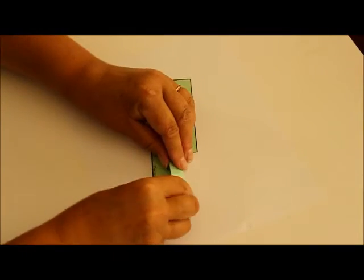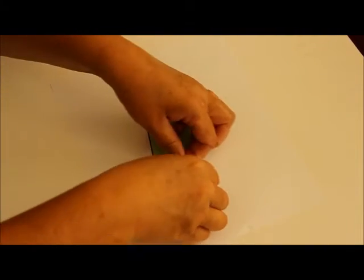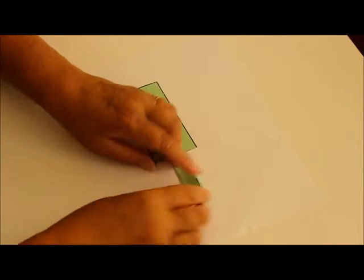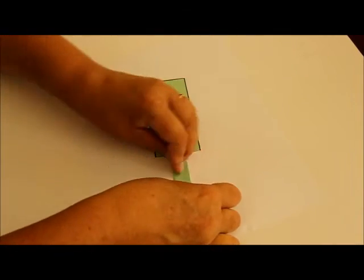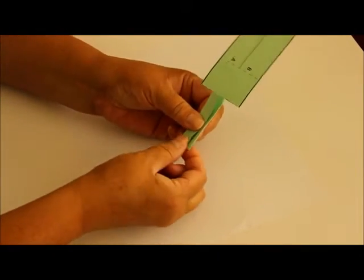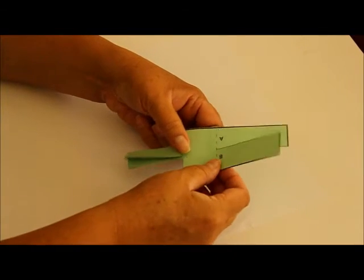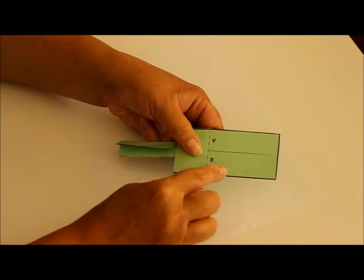You can tape it and put a paper clip on the bottom, or just use a paper clip on the bottom to make it more solid. Then move to the top sections A and B.